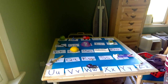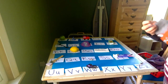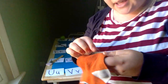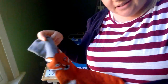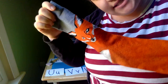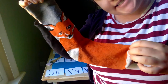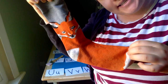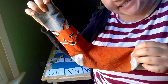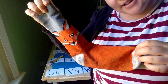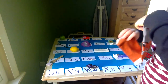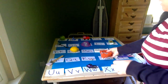What do we have next? What's this? It's got cat hair all over it — what is it? It's a sock! What sound does sock start with? Sss, sock. What letter makes an sss sound? That's right, letter S. So I'm going to fold up my sock and put it on letter S.